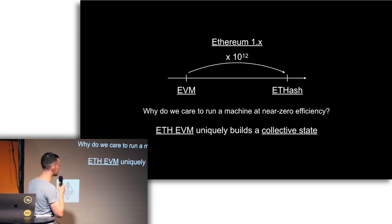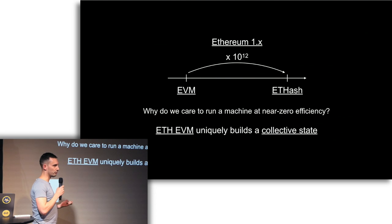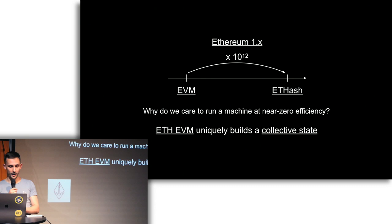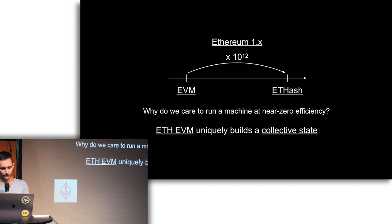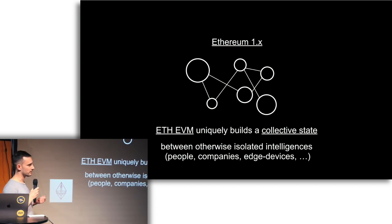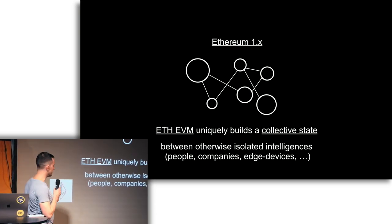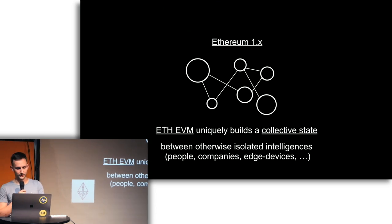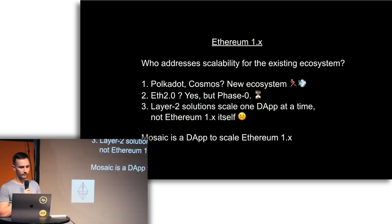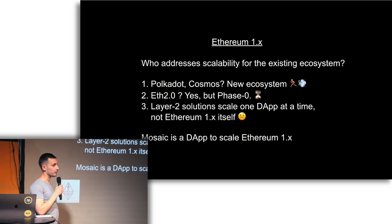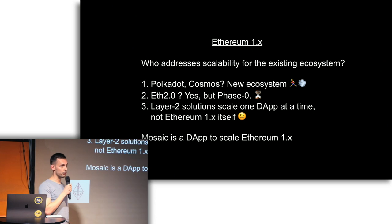My argument is that it uniquely builds a collective state. It solves a problem that we weren't able to solve before, and that's why it's worth trying to improve the efficiency of it. It allows you to connect otherwise unconnected, isolated intelligence — whether that's people, companies, edge devices. But right now we're in a very early age of this machine. So then the question I asked: who is addressing the scalability for the existing ecosystem? There were a lot of projects building this.